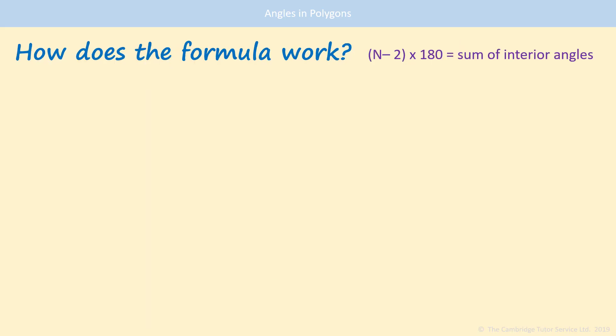Sometimes you're asked to show your knowledge of how the formula works. What you need to know, each polygon contains a certain number of triangles. Looking again at this hexagon, six sides, and it has triangles in there.